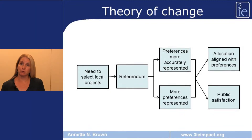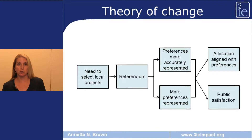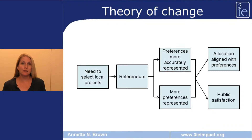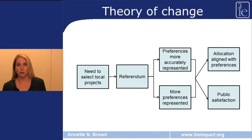One intervention might be a referendum. This intervention could be theorized as preferable to a standard village meeting because it involves a blind ballot election. The outcomes we might expect are first that preferences are more accurately represented, but also that more preferences are represented because it's easier for people to vote in an election than to participate in a consultation meeting.